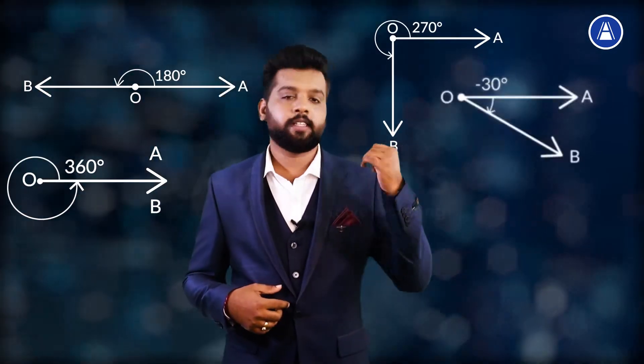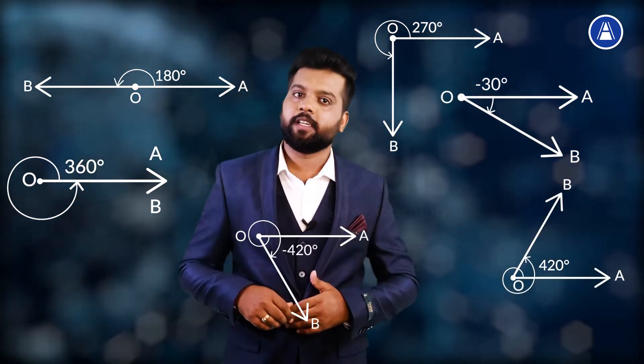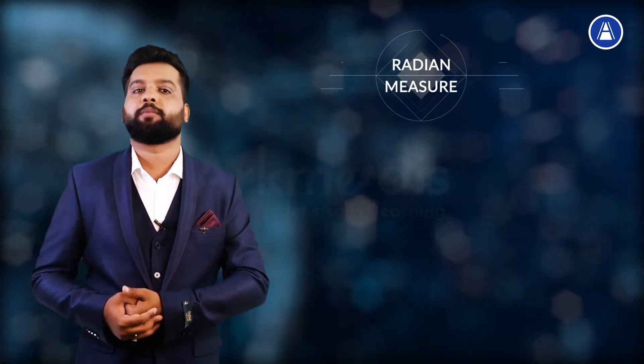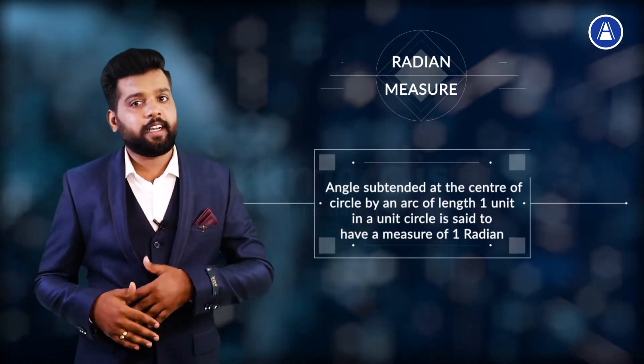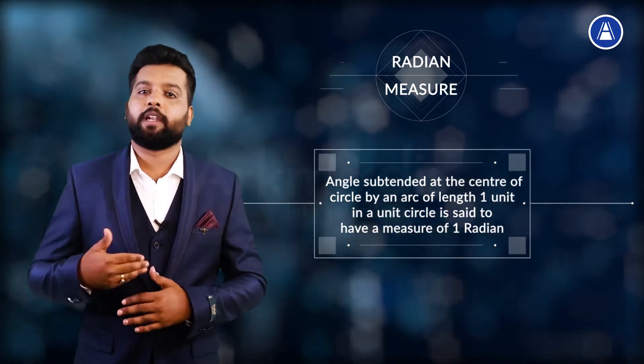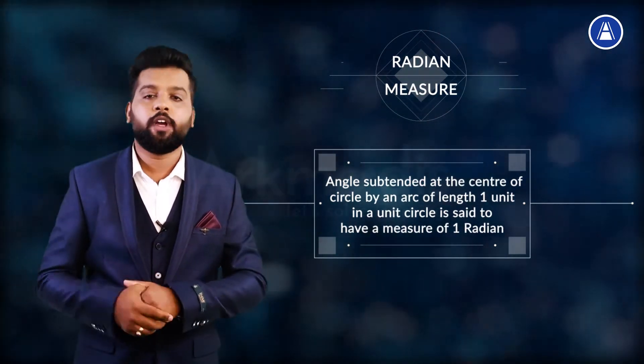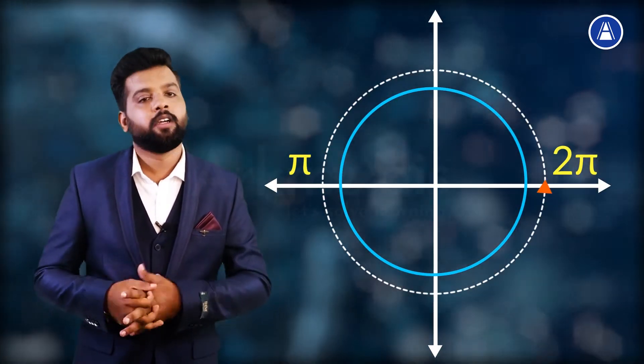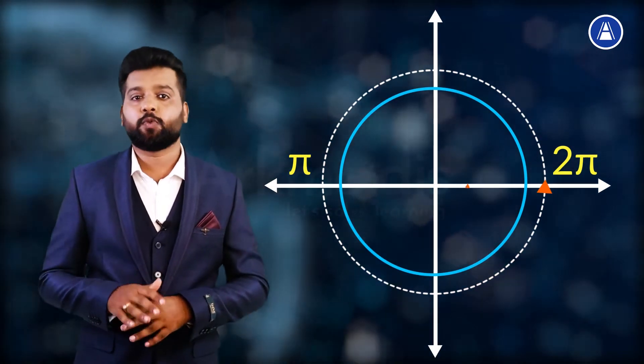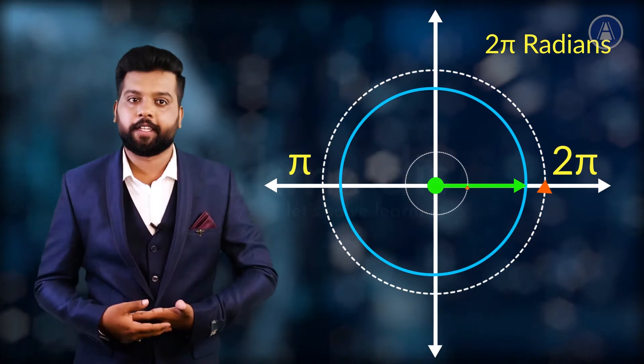The second is the radian measure. This measure involves circles. An angle subtended at the center of a circle by an arc of length one unit in a unit circle is said to have a measure of one radian. Since it is a unit circle, the circumference of the circle is 2π. Thus one revolution of the initial side subtends an angle of 2π radians. These are the units in which we measure angles.